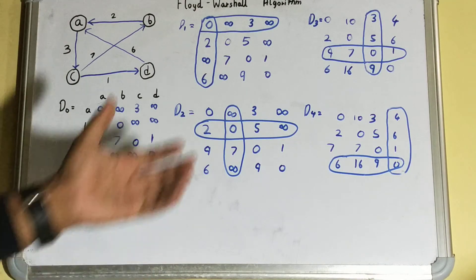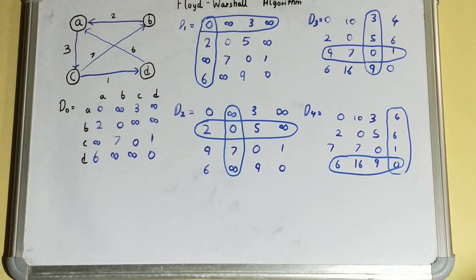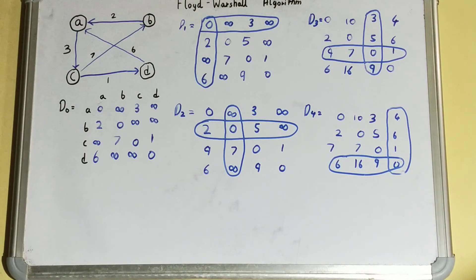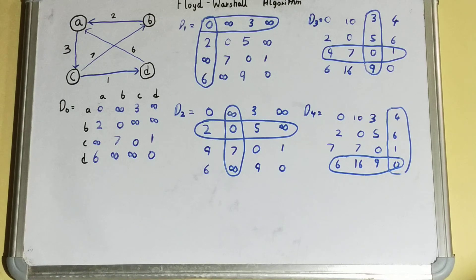This is how you find all-pairs shortest distances using the Floyd-Warshall algorithm. If you have any doubts, comment below and I'll help you as soon as possible. I hope this is fully clear — if not, comment down. Thanks for watching!